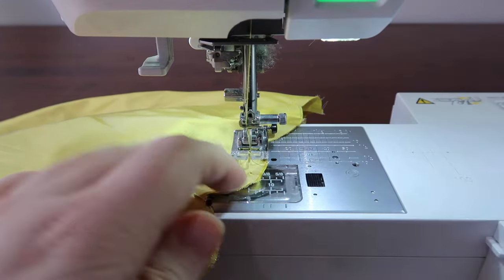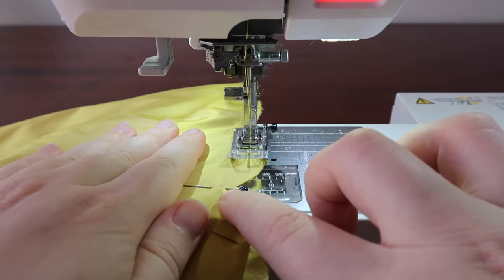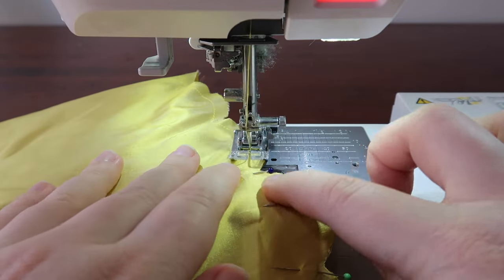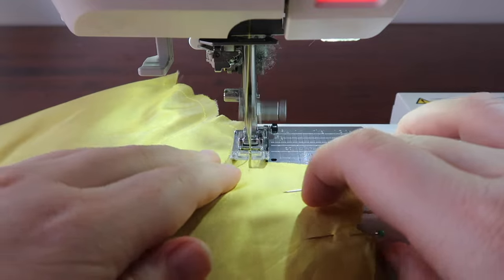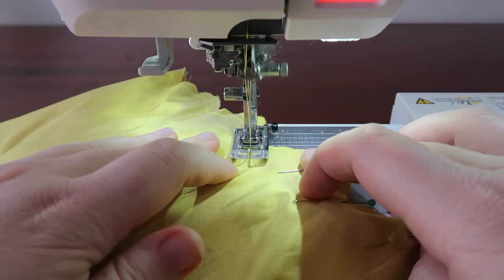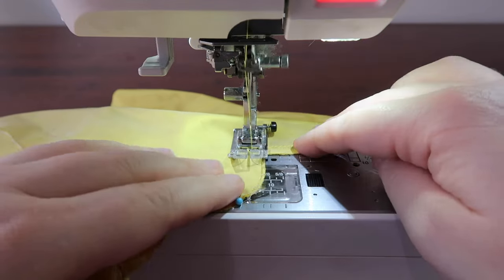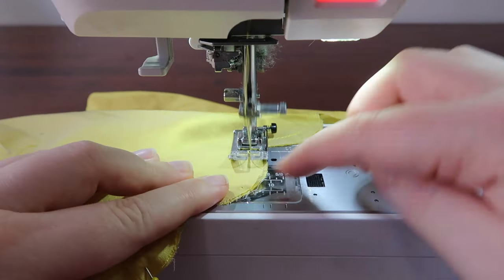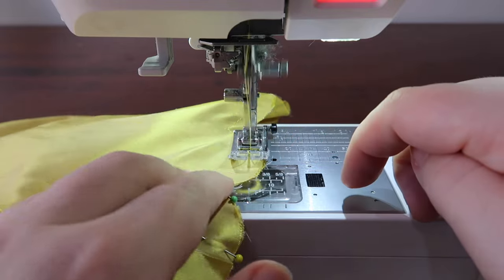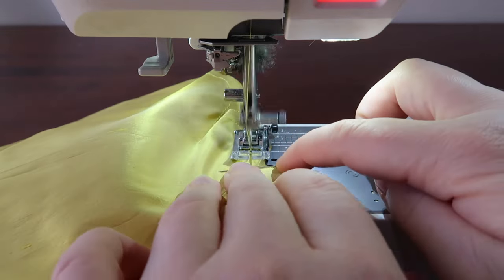When you get to the bottom of the scallop, make sure that your needle is directly in line with the point. Leave your needle in the fabric, lift the presser foot, pivot your fabric to the direction of the next scallop, and lower the presser foot and continue sewing. Although this may seem annoying to do with every scallop, this is the way you will get that crisp finish at every point.